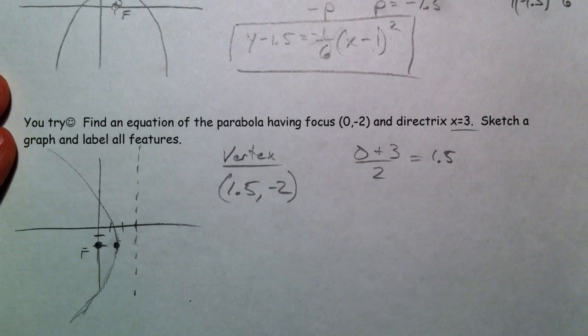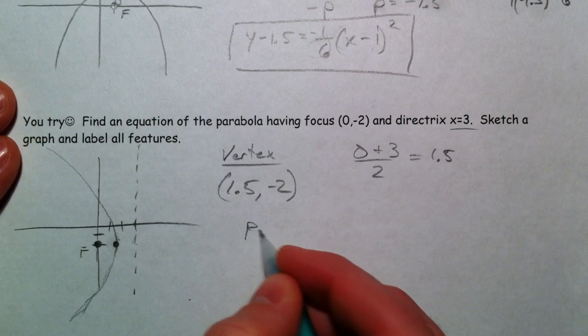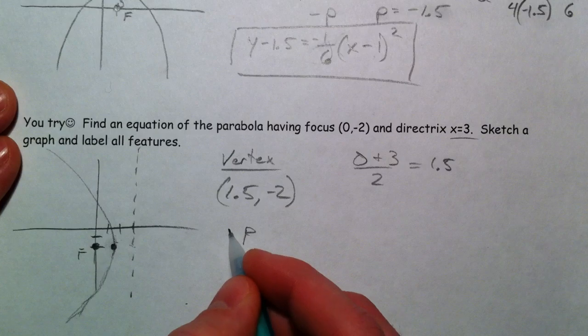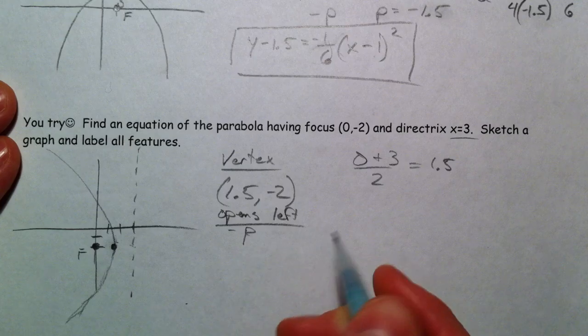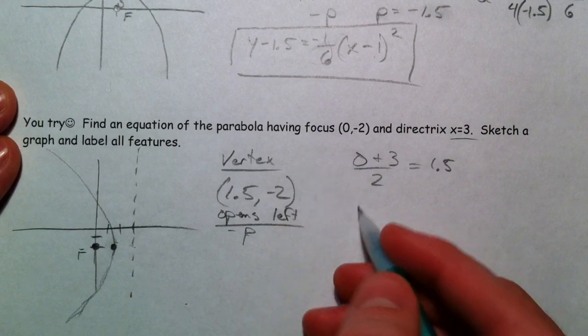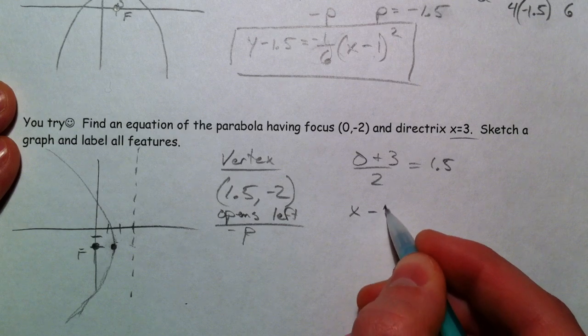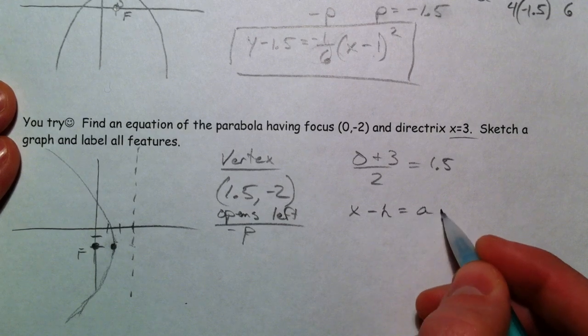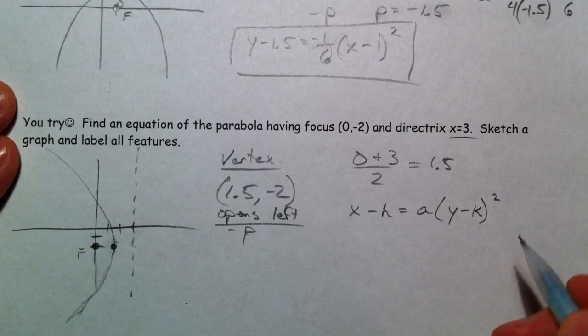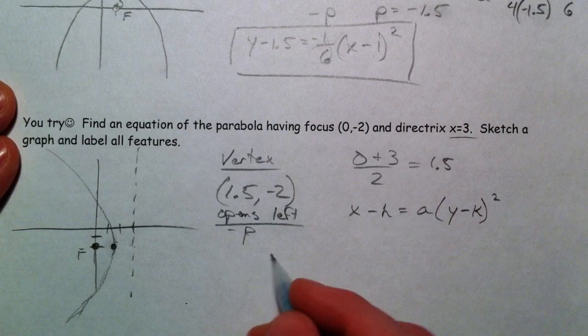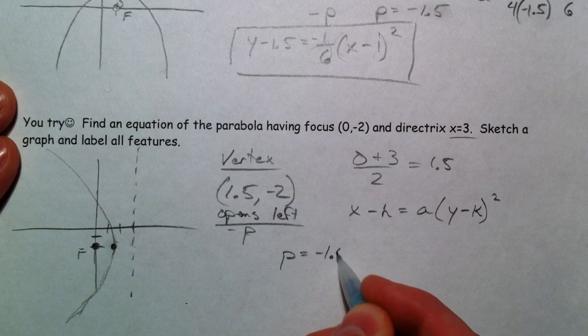It's all very, very visual. And so again, the p value is negative because it opens left. It opens towards the negative side, and we're going to have a y squared equation. So x minus h equals some a, y minus k squared. p, again, is negative 1.5.